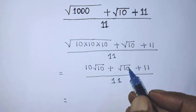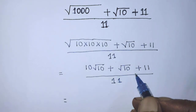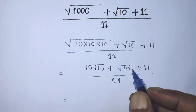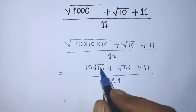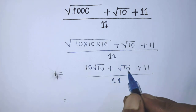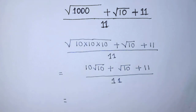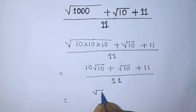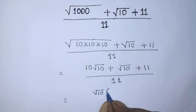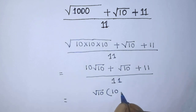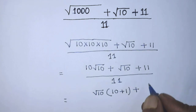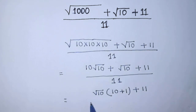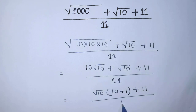In the place of the numerator, the common factor of the first two terms is square root of 10. So we can write square root of 10 times (10 plus 1), plus 11 over 11.